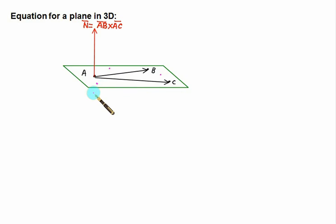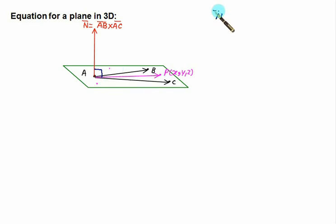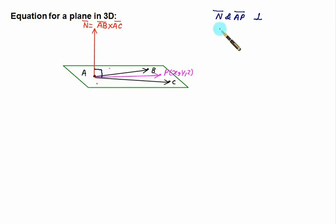Now consider any point in this plane, P(X, Y, Z), and form vector AP. This vector AP lies in the same plane, while n̄ is perpendicular to the plane. This means AP and n̄ are perpendicular to each other. Since the dot product of two perpendicular vectors is always zero, we can use this to form the equation of the plane: n̄ · AP = 0.